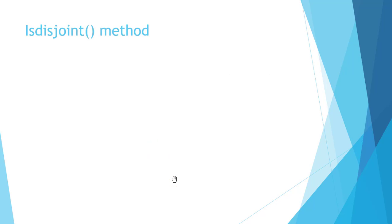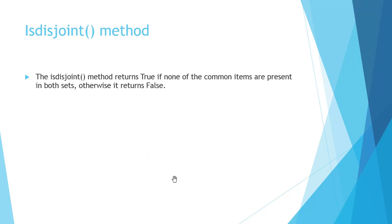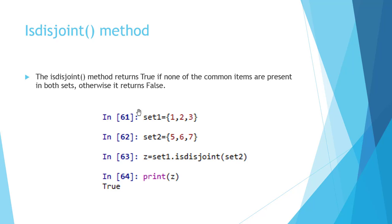Next is the isdisjoint method in sets. The isdisjoint method returns True if none of the common items are present in both sets; otherwise it returns False. For example, set1 contains 1, 2, 3 and set2 contains 5, 6, 7. As we can see, both sets don't have any common items. So, z = set1.isdisjoint(set2) will return True because both sets are disjoint to each other.